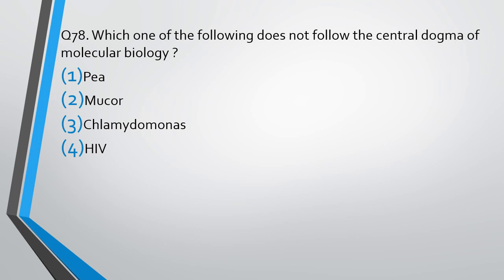Question number 78. Which one of the following does not follow the central dogma of molecular biology? Pea, mucle, chlamydomonas, HIV. The correct answer is option 4. HIV doesn't follow the central dogma of molecular biology because reverse transcription occurs in HIV.